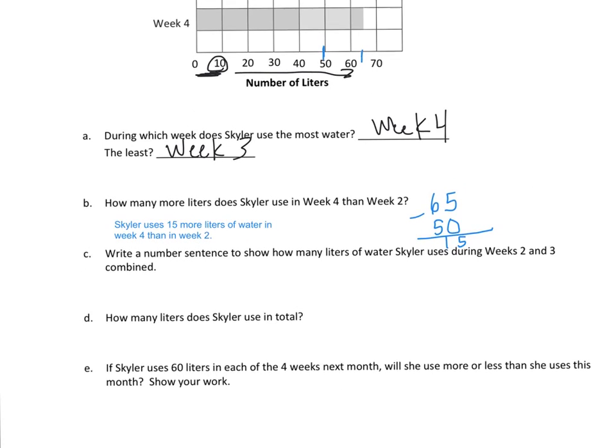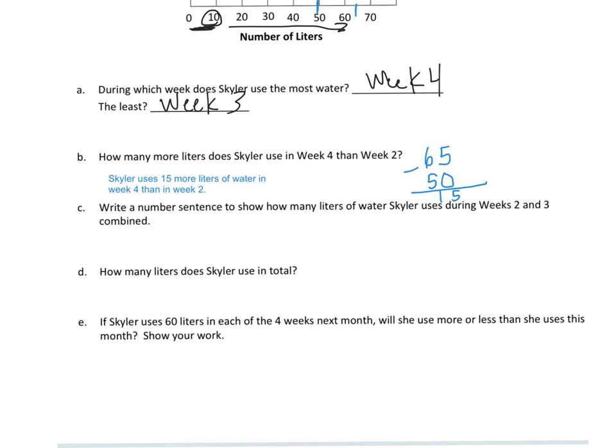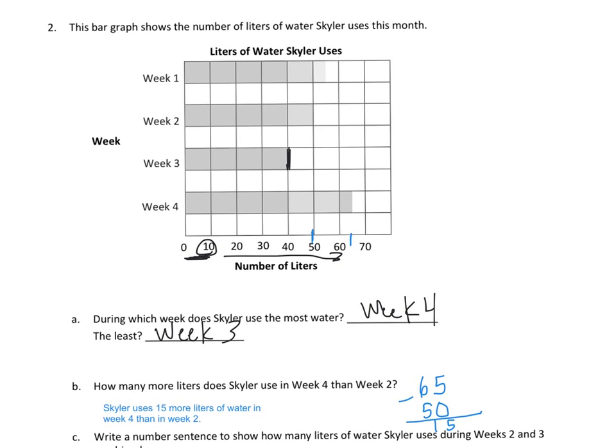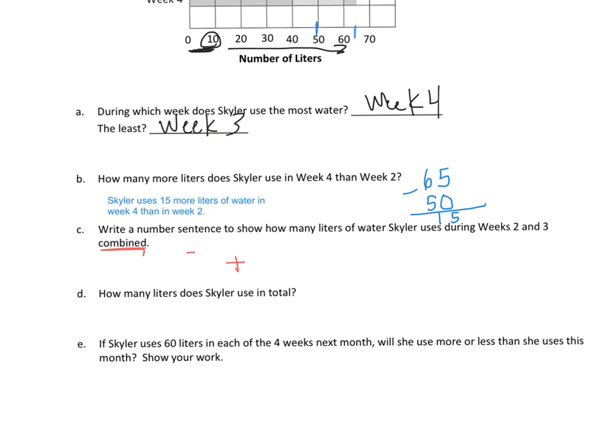So, let's take a look now down to C. Write a number sentence to show how many liters of water Skyler uses during week 2 and 3 combined. So, if I'm talking about the word combined, it's going to mean addition. So, I want to first look for 2 and then for 3. And I see 2 is right there at 50. And 3 is at 40. So, I have 50 and 40, and I'm looking to combine these. And that will equal, if I have 4 10s and 5 10s, I then have 9 10s or 90. So, my answer statement, there it is. Skyler uses 90 liters of water in weeks 2 and 3 combined.